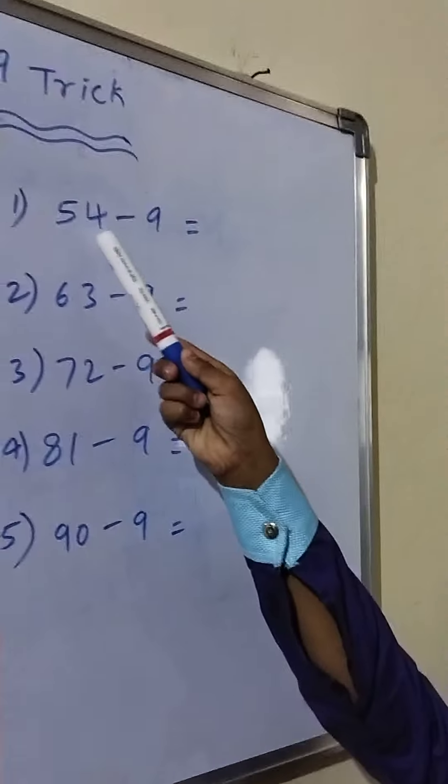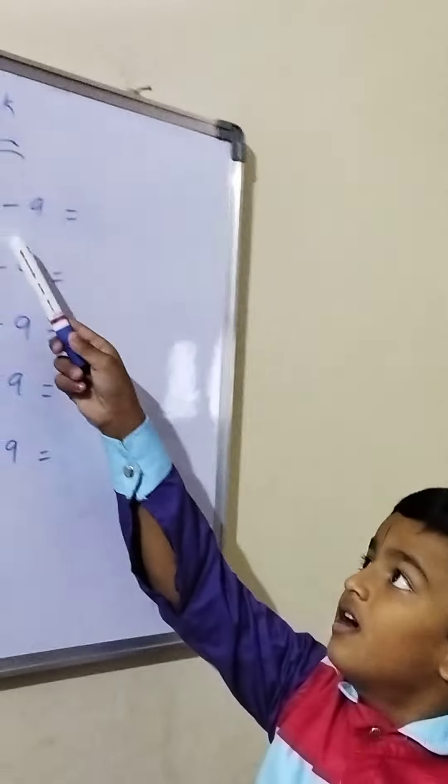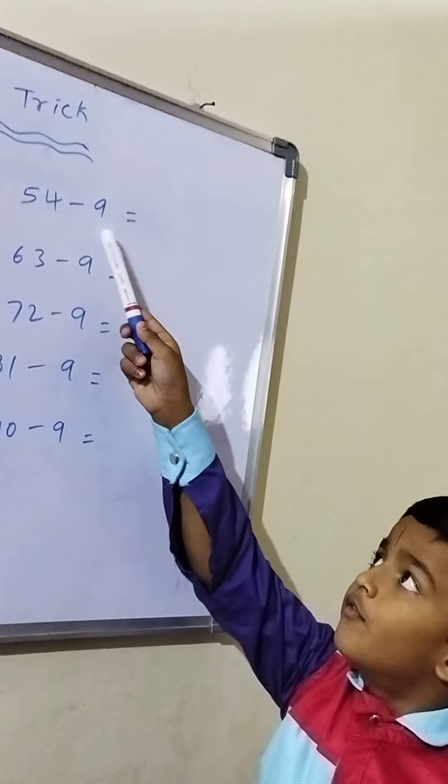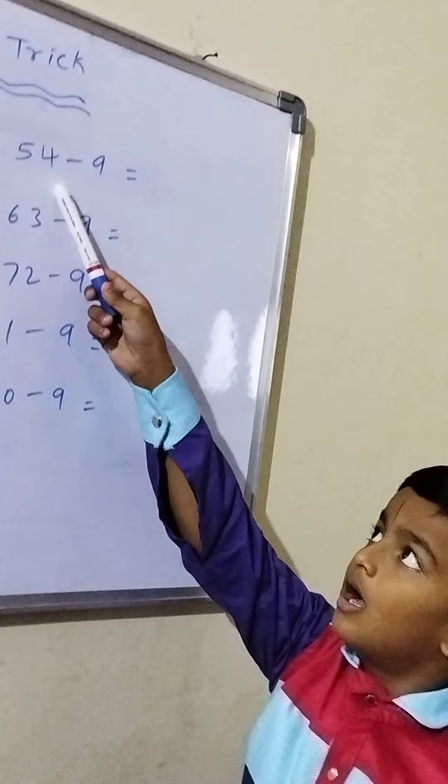54 minus 9: subtract 10 to get 44, then add 1 to get 45.